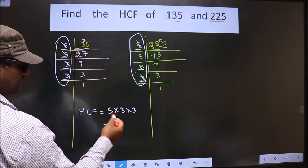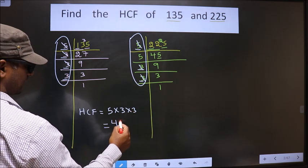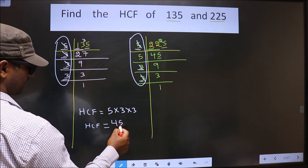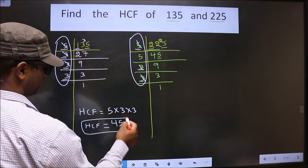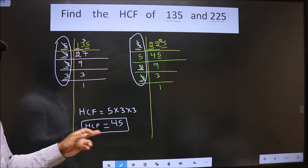So, our HCF is, you multiply all this: 5 into 3 is 15, 15 into 3 is 45. So, this is our HCF. Okay. Am I clear?